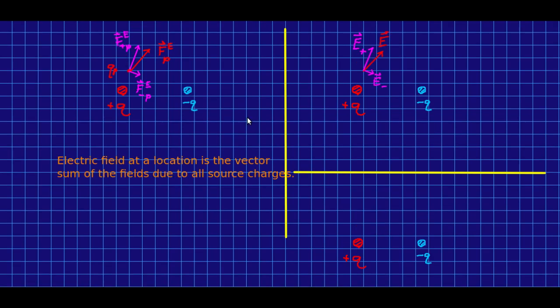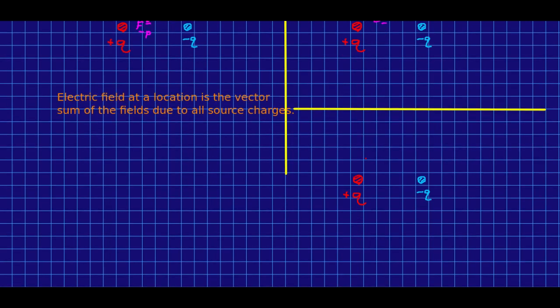So now we can proceed thinking in that way to draw the full vector field. So we already know at this point that there is a field vector that points this way.